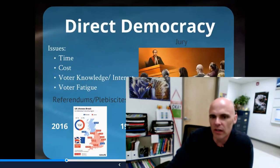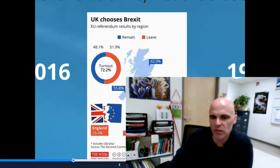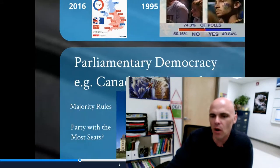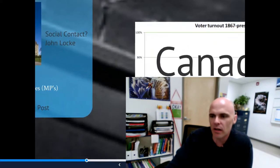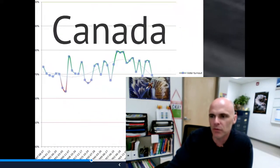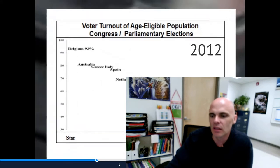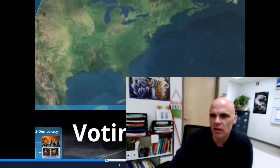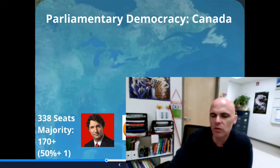Then we looked at voting — the idea of direct democracy versus indirect democracy, the problems with first past the post, the more democratic proportional representation system, issues like apathy and low voter turnout among young Canadians. We looked at issues within the parliamentary system of misrepresenting the will of the people because of the way we count the vote.